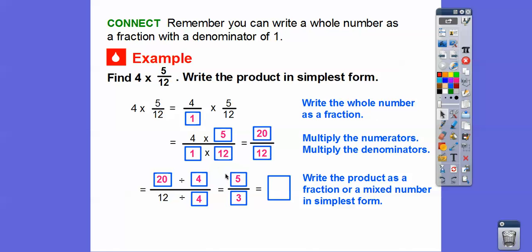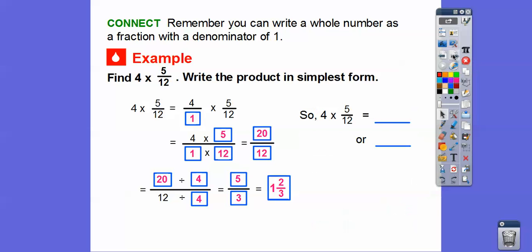Five-thirds reduces to a mixed number. Five-thirds is the same as three-thirds plus two-thirds, and three-thirds equals one, so one plus two-thirds gives us one and two-thirds. So four times five-twelfths equals five-thirds, or one and two-thirds.